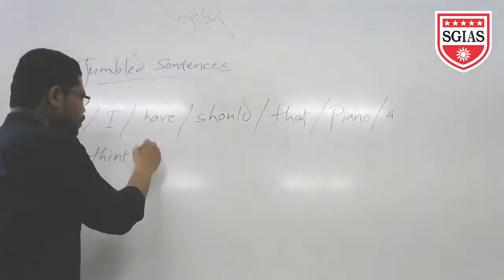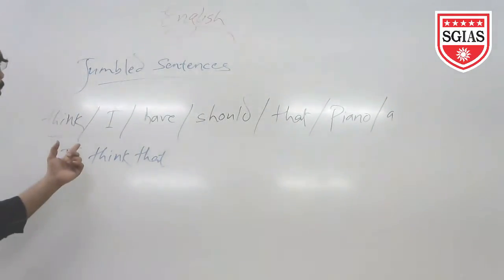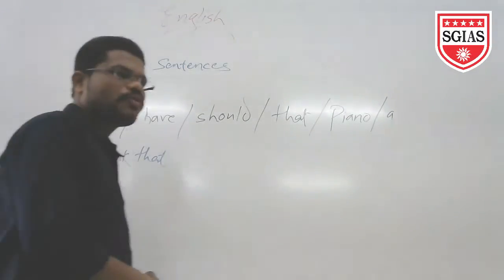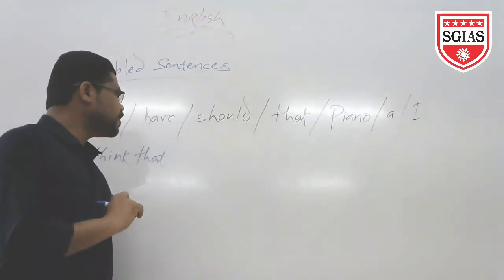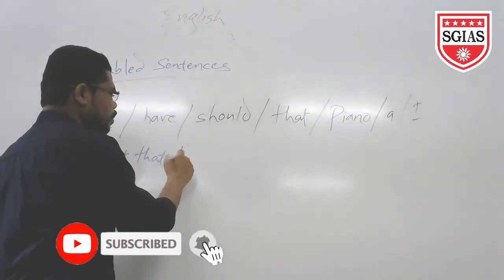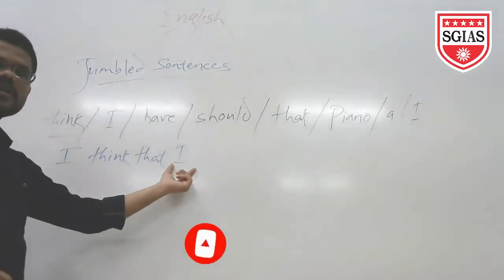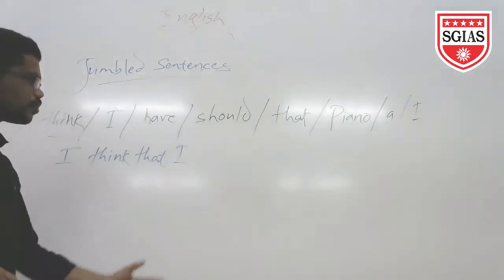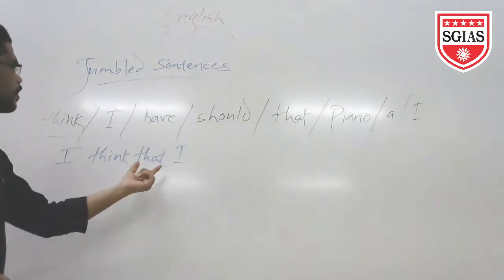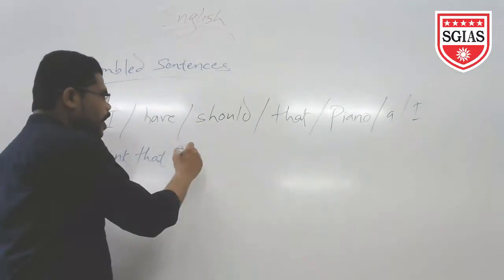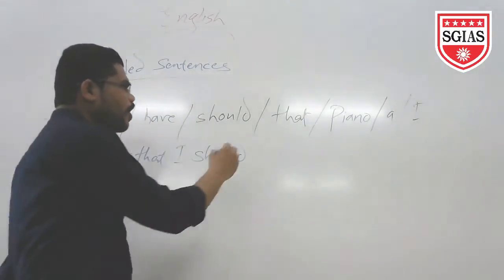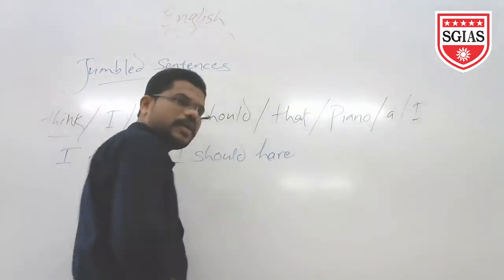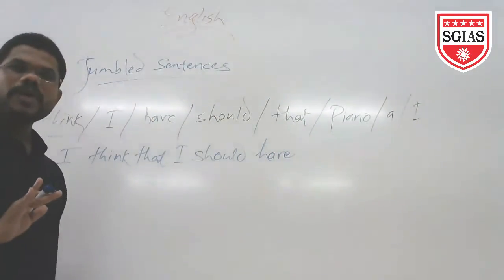The conjunction 'that' is used to join the subordinating clause, giving us 'I think that.' In the subordinating clause, 'I' is again the subject. The verb part is 'should have' — 'should' is a modal auxiliary here, and 'have' is used as a primary auxiliary functioning as the main verb. So: 'I should have' — what? The object is 'a piano,' where 'a' is the article for the noun.